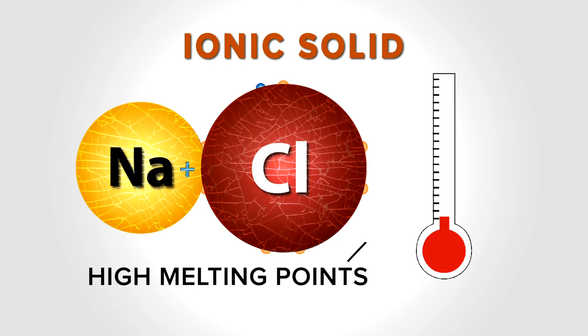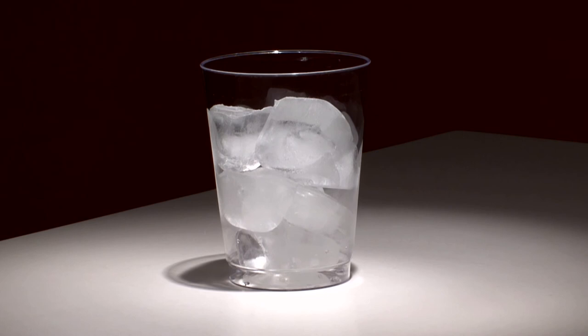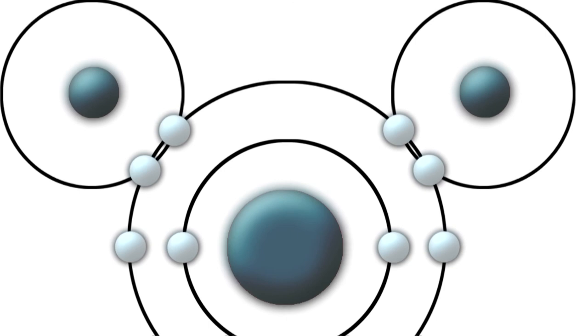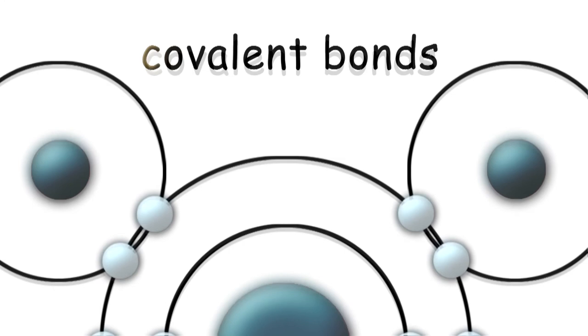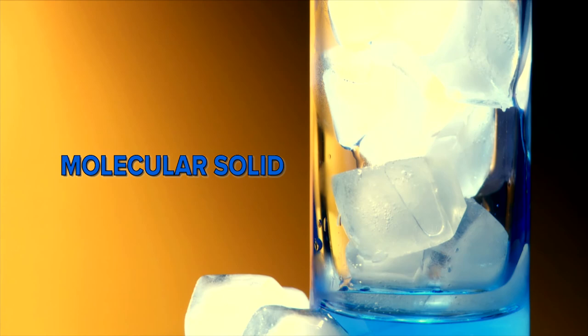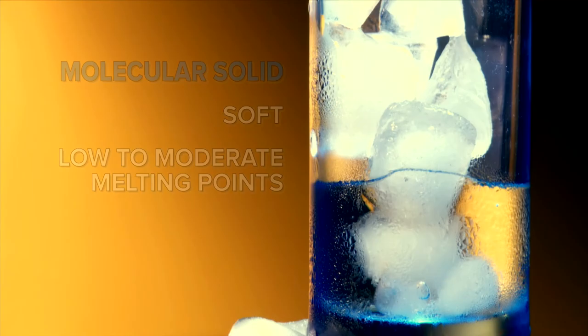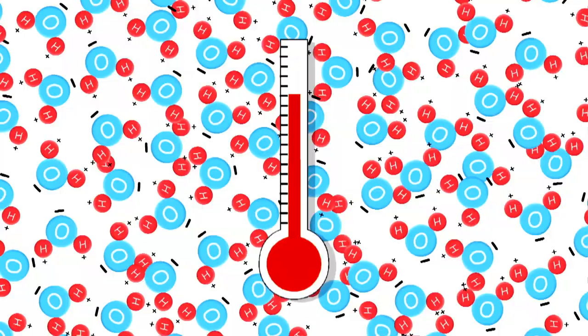Ice is different. Ice is the solid form of water, H2O. Two kinds of bonds are at work in water: the two hydrogen atoms and one oxygen atom in each H2O molecule are bonded with covalent bonds. In water, H2O molecules bond to each other with hydrogen bonds. This makes ice a molecular solid — fairly soft with low to moderate melting points. It doesn't take long for ice cubes to melt, even in cool room temperatures. H2O's freezing point, the temperature at which it turns into solid ice again, is 32 degrees Fahrenheit, or zero degrees Celsius.